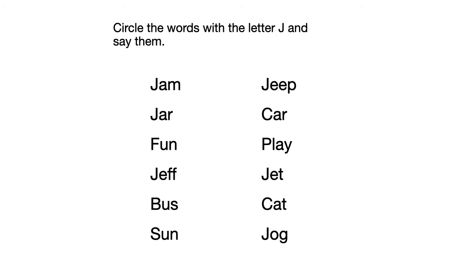Let's go ahead and say the J words together. The first word is J-U-M. The next J word is J-R. The next word is J-F — Jeff. There are no other J words in this section. J-E-E-P — jeep. The next J word is J-E-T — jet. And the last word is jog. If you identified all of those J words, you are correct.